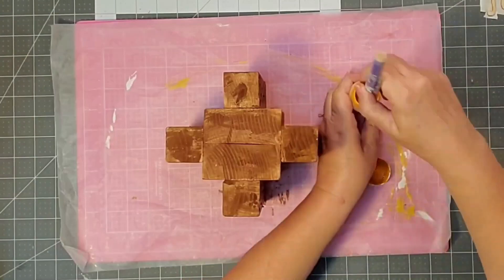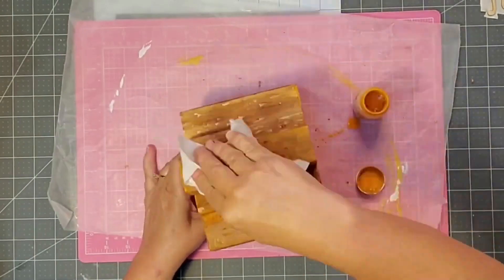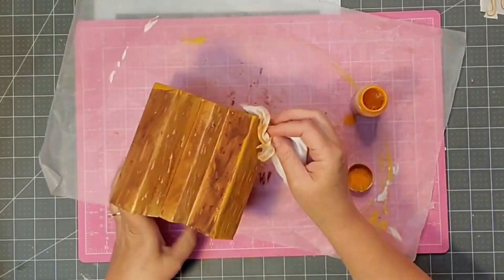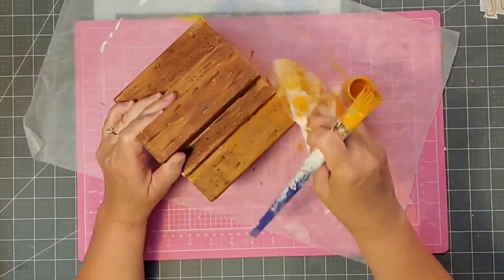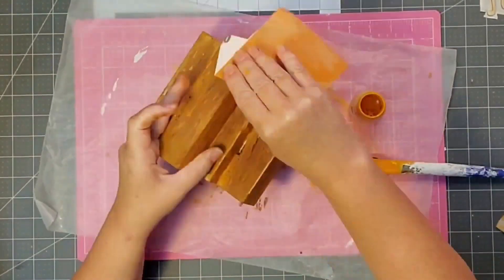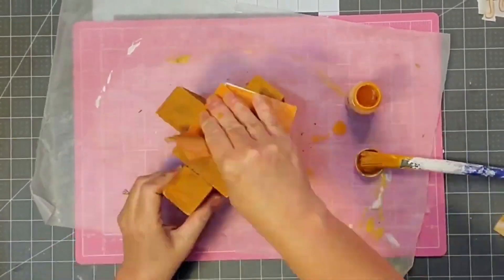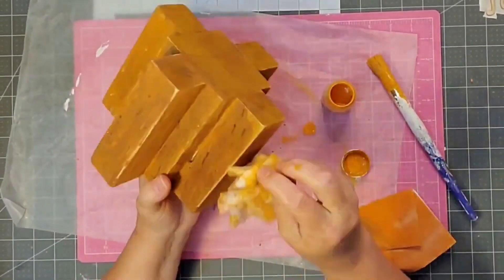Once my pumpkin is dry, I'm going to come in with this pumpkin colored chalk paint, and it is very watered down. This was just the dregs at the bottom, and I'm going to stain it in the orange, and I'm going to wipe off any excess with my baby wipe, and then I'll just come in once it's dry again, and I'm going to distress those edges with some sandpaper.